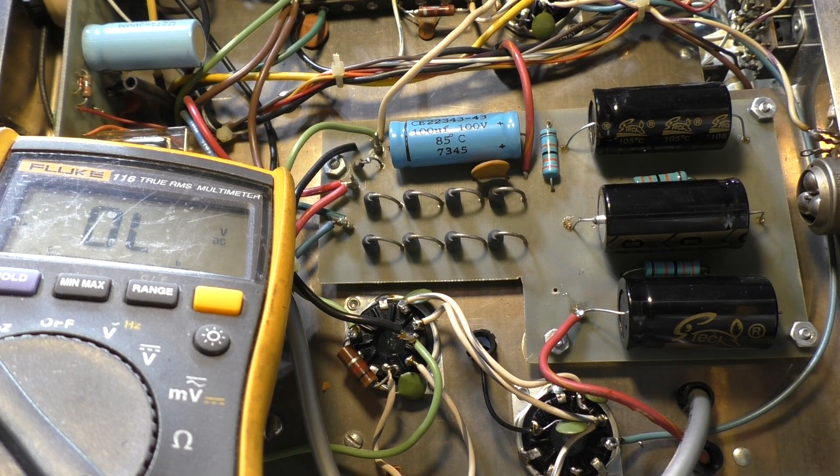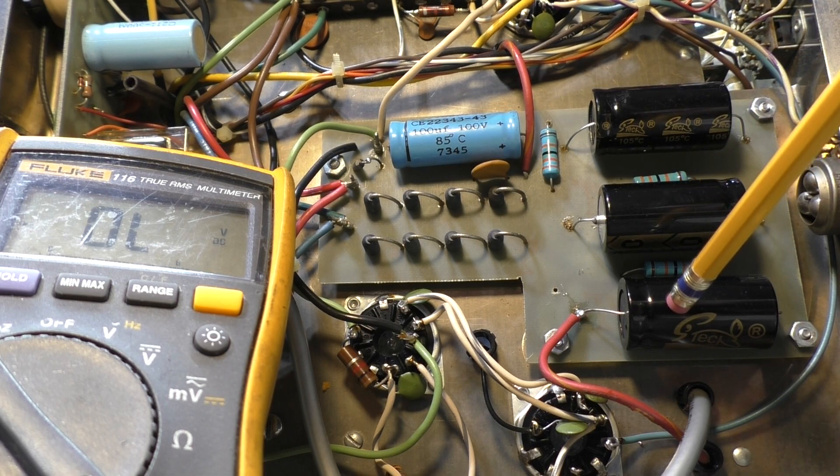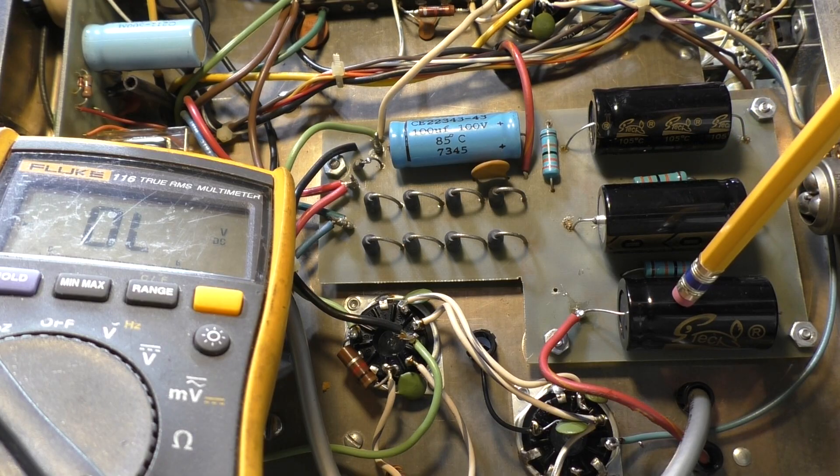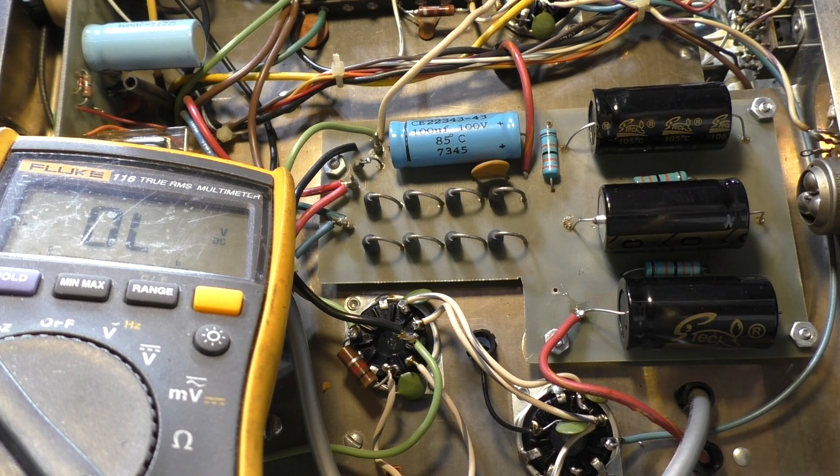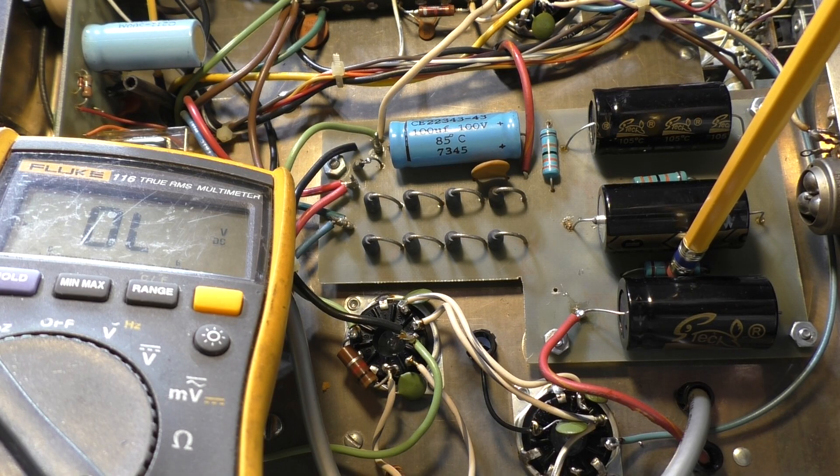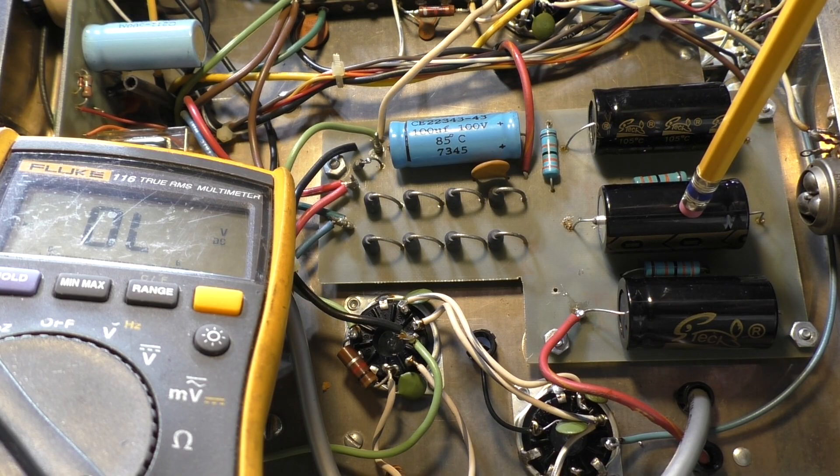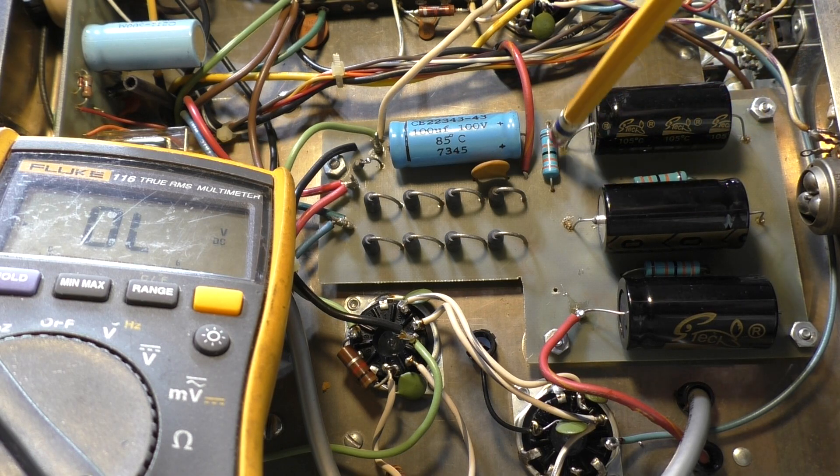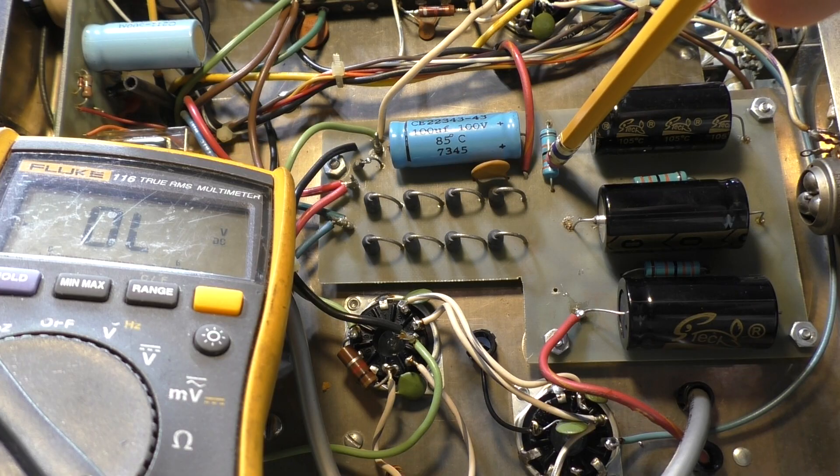Bleeder resistors also, on a capacitor bank where you have multiple capacitors like this amp has three here, some higher voltage amps might have 10 of these in series. So not only do the bleeder resistors bleed, they also equalize the voltage so the voltage should go equally across each capacitor.